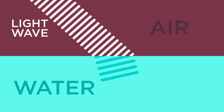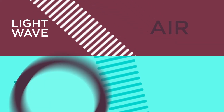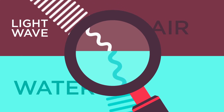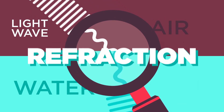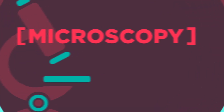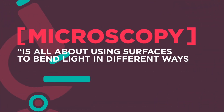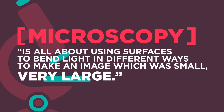it changes speed. Since water is denser than air, the wavelengths of light actually slow down as they pass from air to water. This is called refraction. Microscopy is all about using surfaces to bend light in different ways to make an image that was initially small very large.